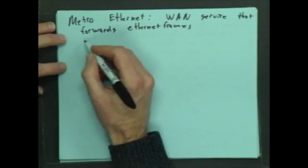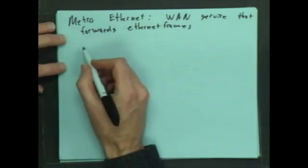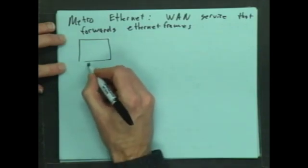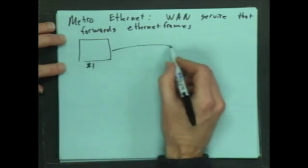What this means is if I have two sites, let's say I'm in Norfolk and I have two sites. So maybe I'm a bank here and I have branch number one and then I have headquarters.